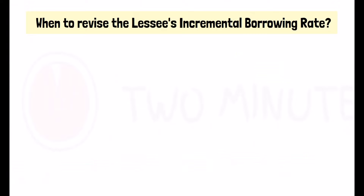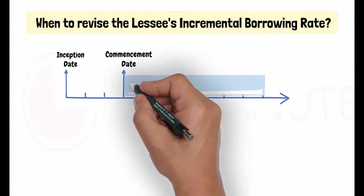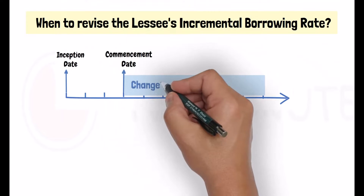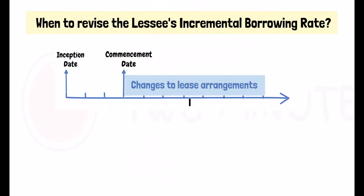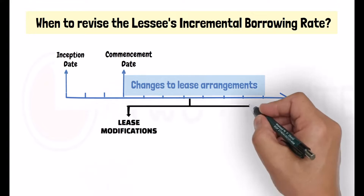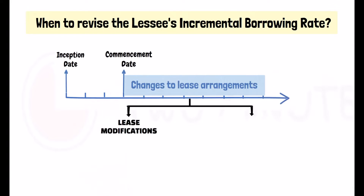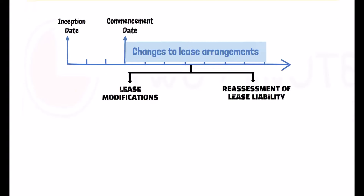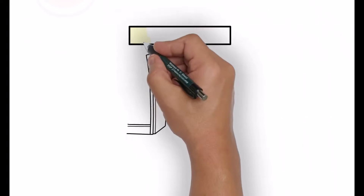One last question in this lecture: now that we have calculated the lessee's incremental borrowing rate, do we need to revise that calculation? The lessee is required to revise the discount rate when there is a lease modification or a reassessment of the lease liability. We will talk about that in the lectures to come.